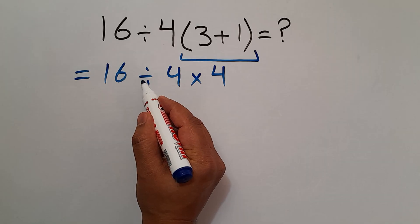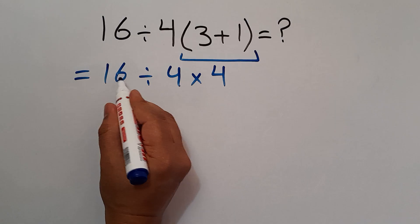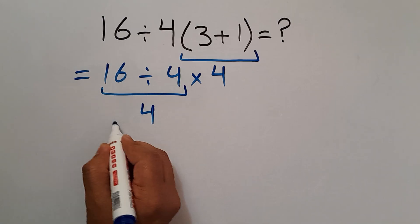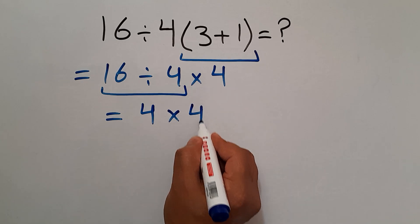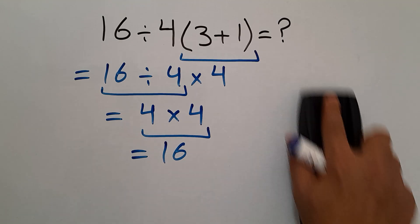So first 16 divided by 4 which equals 4, so 4 times 4, and 4 times 4 equals 16. So our final answer to this problem is just 16.